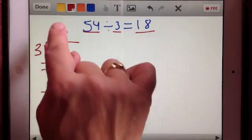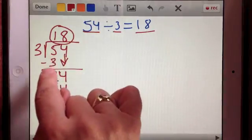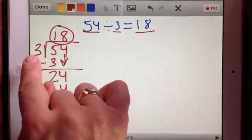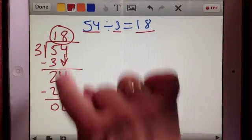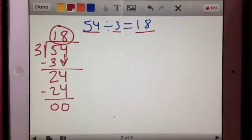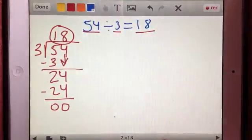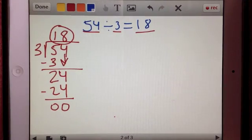So what this answer tells us is, again, like we said up here, there are three groups of 18 in 54. All right, so let's slow that method down just a teeny bit. And now let's look at how it works and why it works.